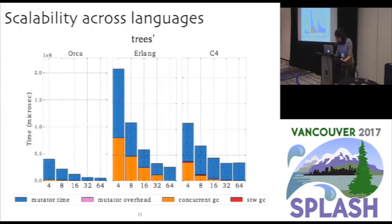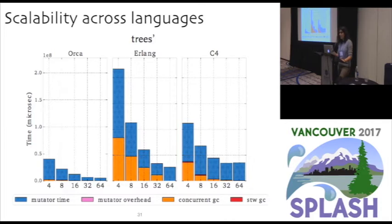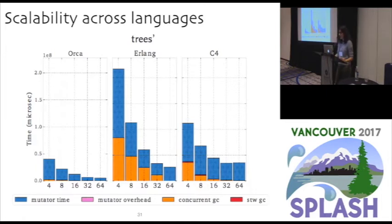We also tried to compare Pony against other languages. Although it's very hard to compare different languages running in completely different VMs, we wrote equivalent micro-benchmarks and ran them at different core counts between 4 and 64, measuring total execution time and also how long garbage collection takes — shown in orange is concurrent garbage collection time. The results are really encouraging: Pony with Orca is behaving much better than the two other languages — almost 4 to 5 times better than Erlang, and almost 3 times better than Akka.